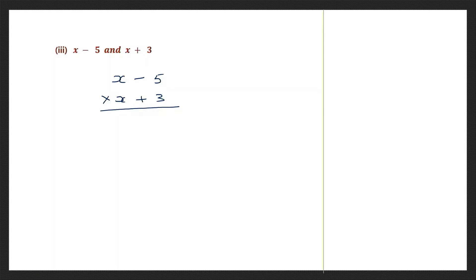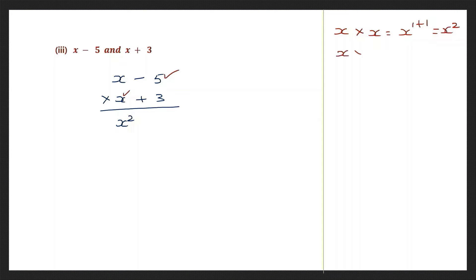First we start with x into x. So that will be x into x, which is x to the power of 1 plus 1, giving x squared. We are writing x squared here. Now we're going to multiply x with minus 5: plus into minus is minus 5x. So the answer is minus 5x — we'll write it down, minus 5x.